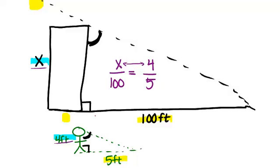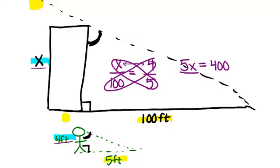Now we solve this equation by cross-multiplying so that means multiply 5 times X and 4 times 100 and you end up with 5X equals 400 and then you just divide both sides by 5 and get 80. So that means that the building must be 80 feet tall.